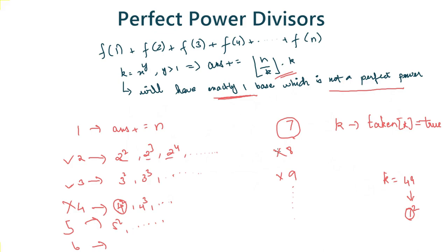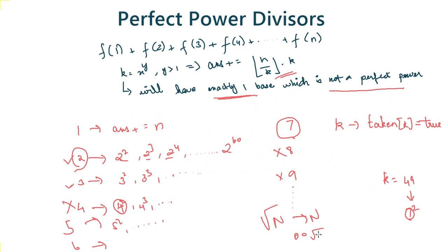Now, how many perfect powers can a base have? For base 2, since n is up to 10^18, the maximum power is around 2^60 ≈ 10^18, so there are at most 60 powers per base. While iterating over bases, the highest base we need to go to is √n, since the square of √n equals n. So the complexity is O(60 × √n), and since n is on the order of 10^18, this would be very slow. So how can we optimize further?